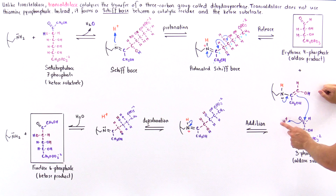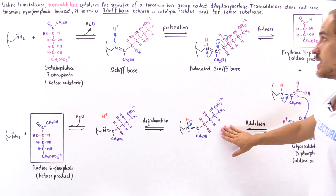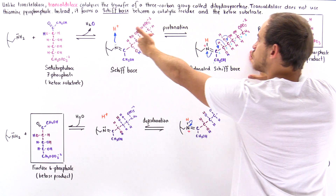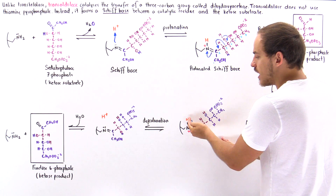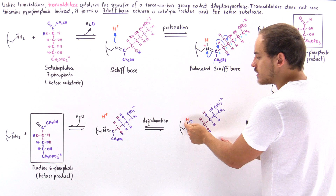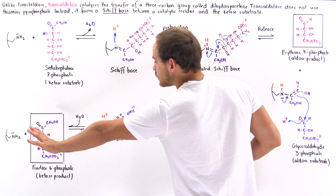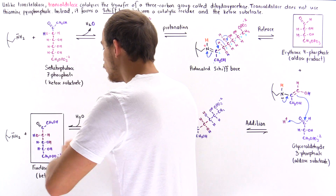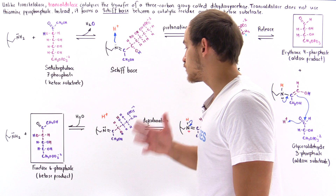That also breaks the pi bond on glyceraldehyde 3-phosphate, which picks up the H ion. Once this addition reaction takes place, we form the following intermediate. We then have a deprotonation — we kick off the H⁺ ion, and those two electrons in the broken sigma bond end up on the nitrogen. In the final step, we have a hydrolysis reaction, and we produce the final product: fructose 6-phosphate, which is our ketose product molecule.